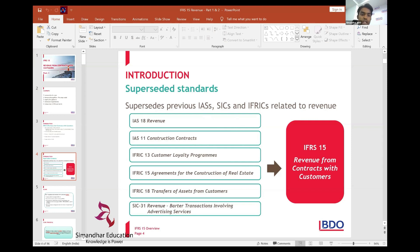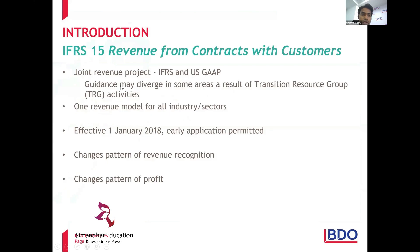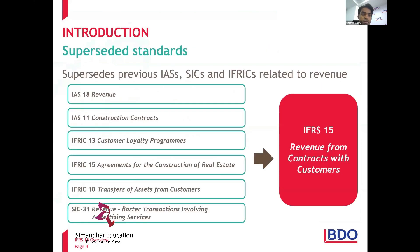Specifically, IFRS 15 superseded: IAS 18, IAS 11 Construction Contracts, IFRIC 13 Customer Loyalty Programmes, IFRIC 15 Agreements for Construction of Real Estate, and IFRIC 18 Transfer of Assets from Customers. These were the standards and interpretations that got superseded by the new standard.